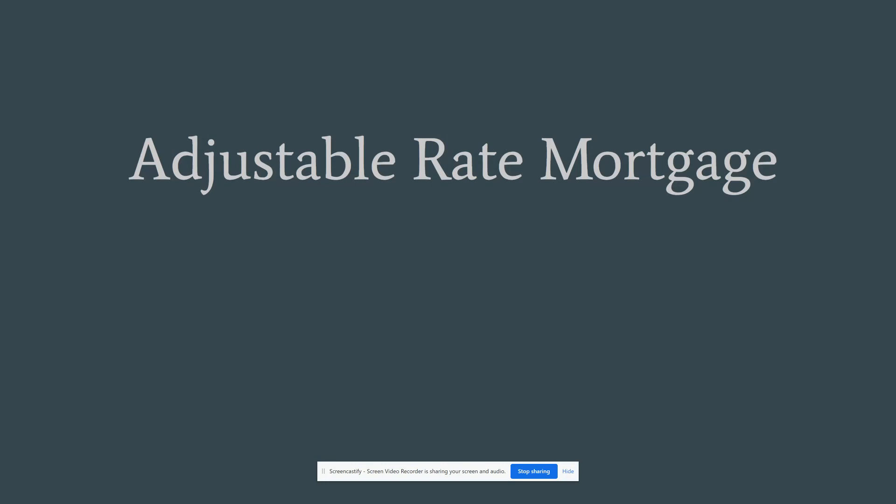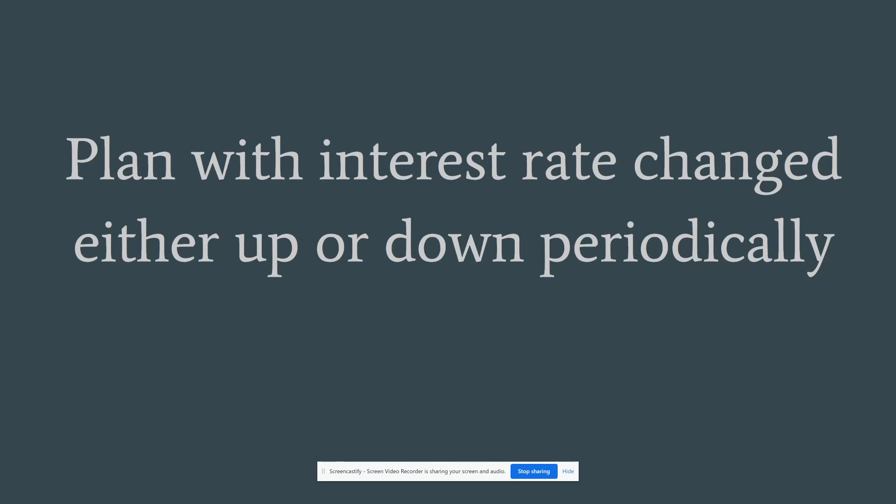Adjustable rate mortgage. This is a plan with interest rate changed either up or down periodically. Basically what this does is it shifts the risk and the reward of a changing interest rate over to the buyer. An adjustable rate mortgage takes those reward or risk factors and shifts them onto the buyer. At the adjustment time, the interest rate is going to go up or down — so the buyer is either going to make out on it or not.